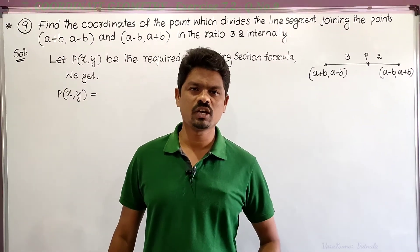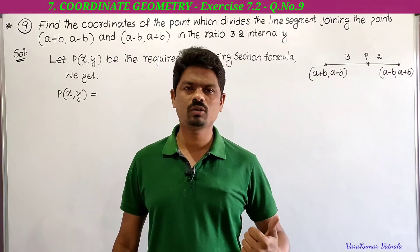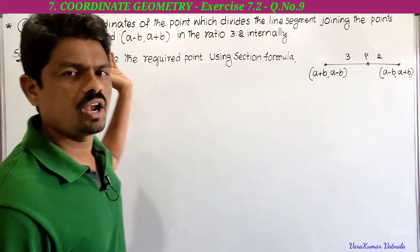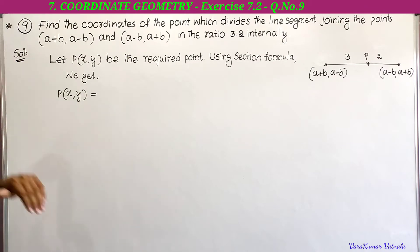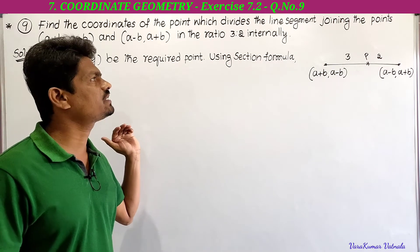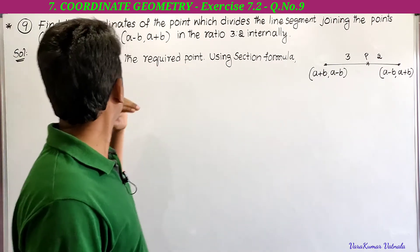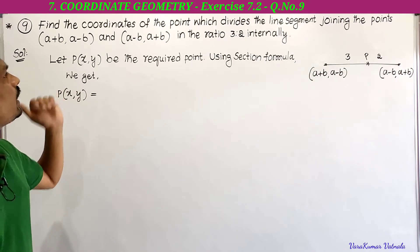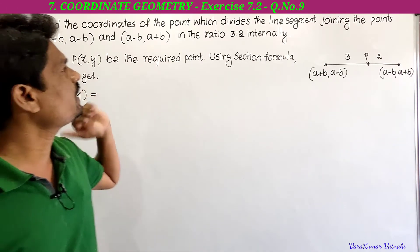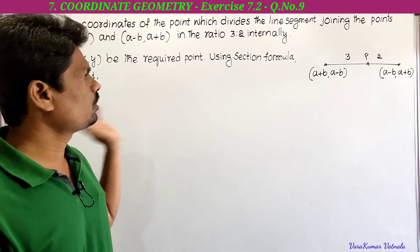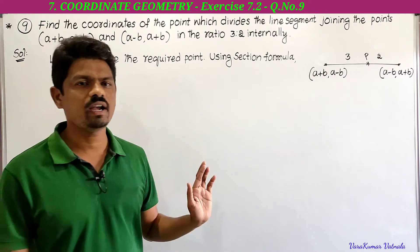Hi, hello, welcome to my channel Learn More Maths. Today we are going to solve problems from Exercise 7.2. This is the ninth problem. It asks us to find the coordinates of the point which divides the line segment joining the points (a+b, a-b) and (a-b, a+b) in the ratio 3:2 internally. Using the section formula, we have to find the required point.